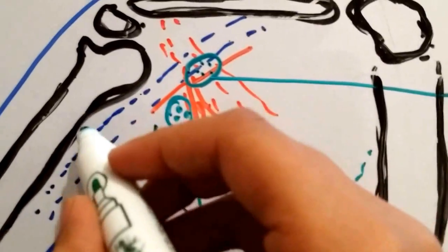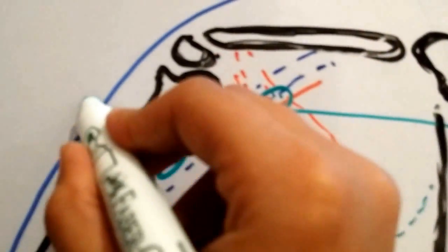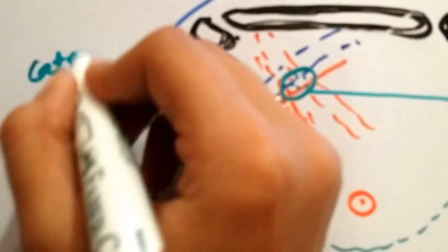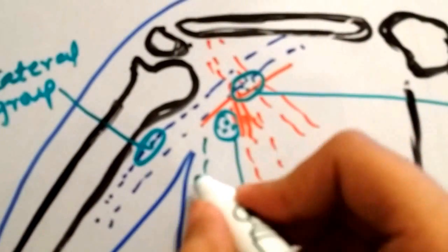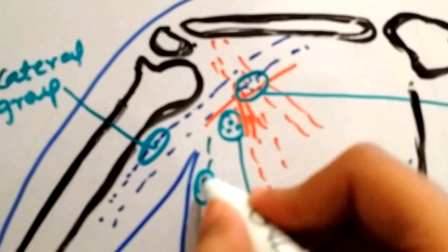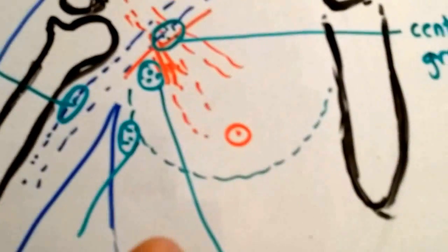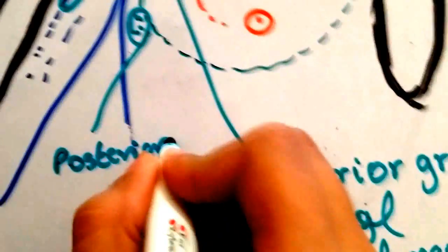The third group is the lateral group of lymph nodes, and they lie along the axillary vein near the humerus. I'm drawing the lateral group out here. These are rarely involved in breast cancer. There is also the posterior group, also known as the subscapular group of lymph nodes, which is also rarely involved in breast cancer.